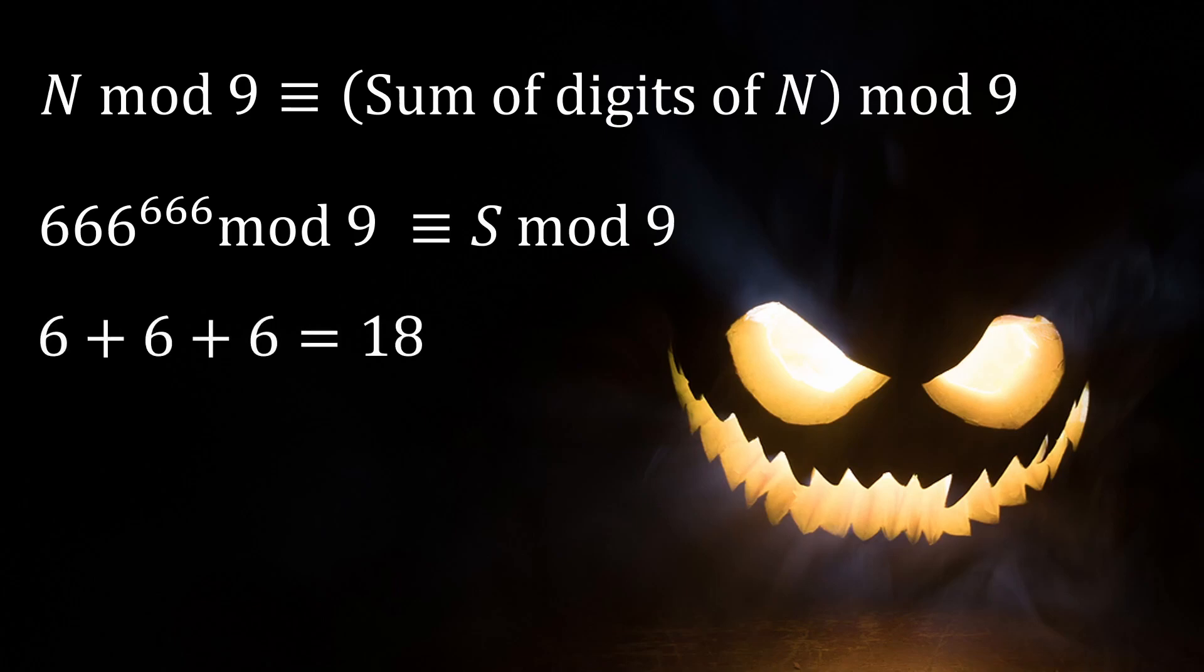Notice that 666 is divisible by 9 since the sum of its digits is 18 which is divisible by 9, so 666 mod 9 is congruent to 0.